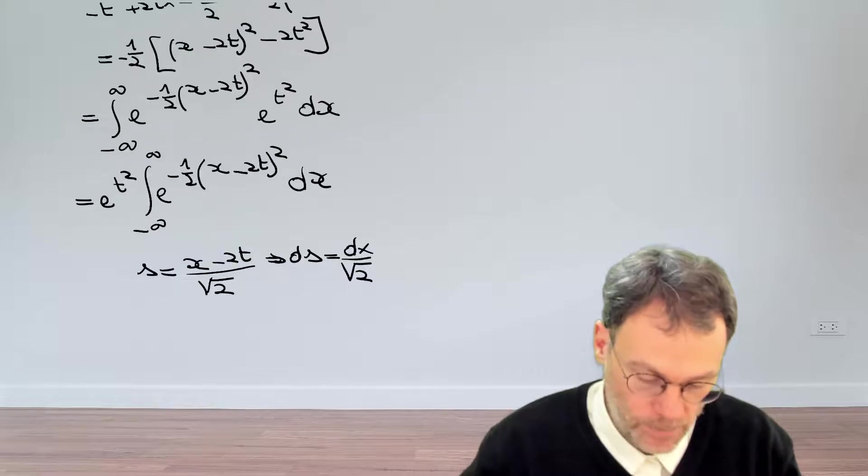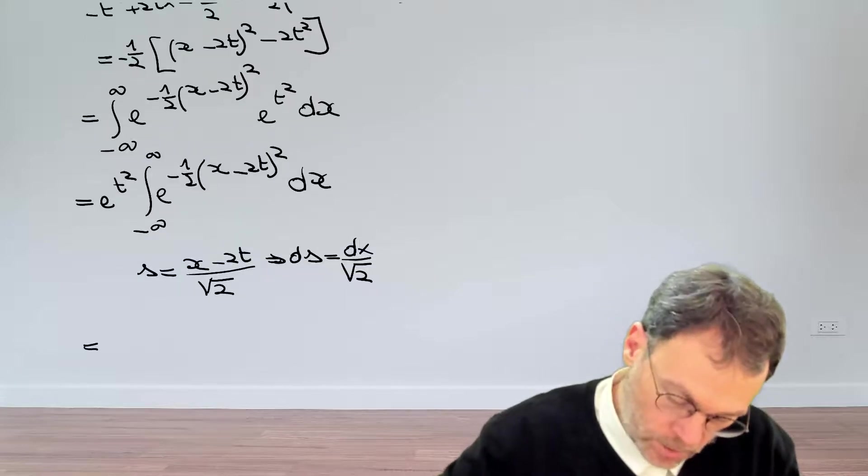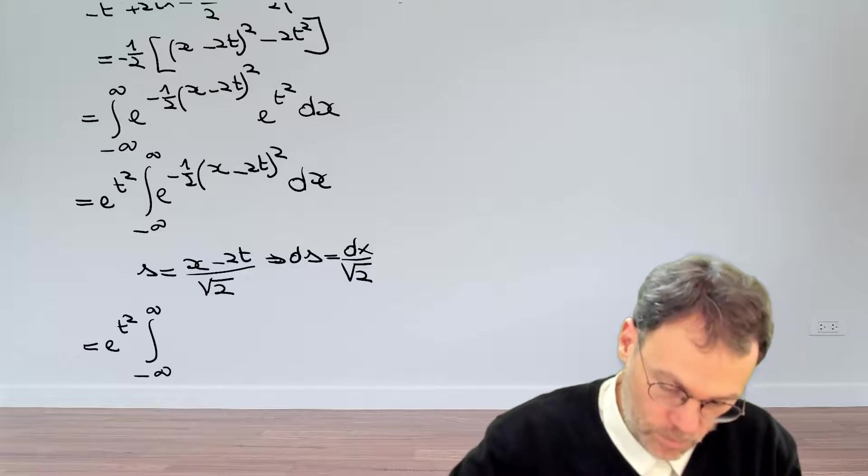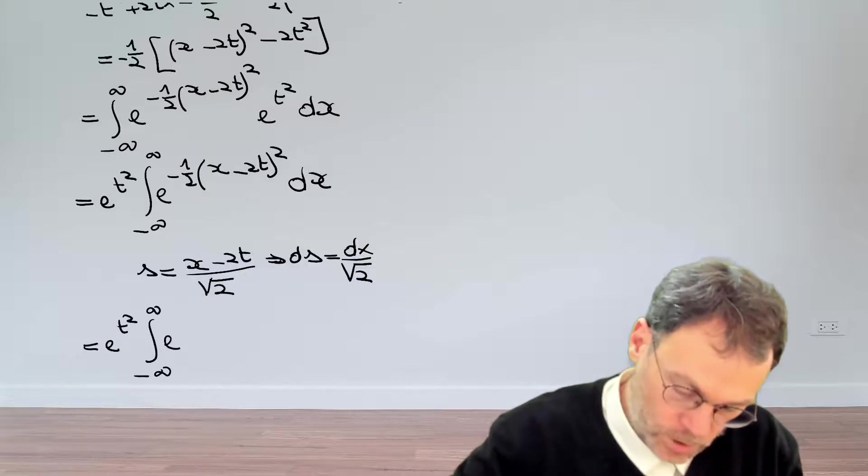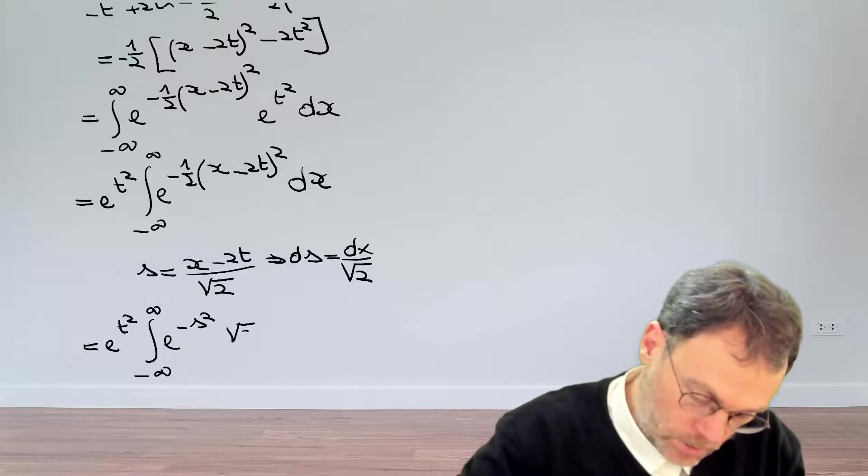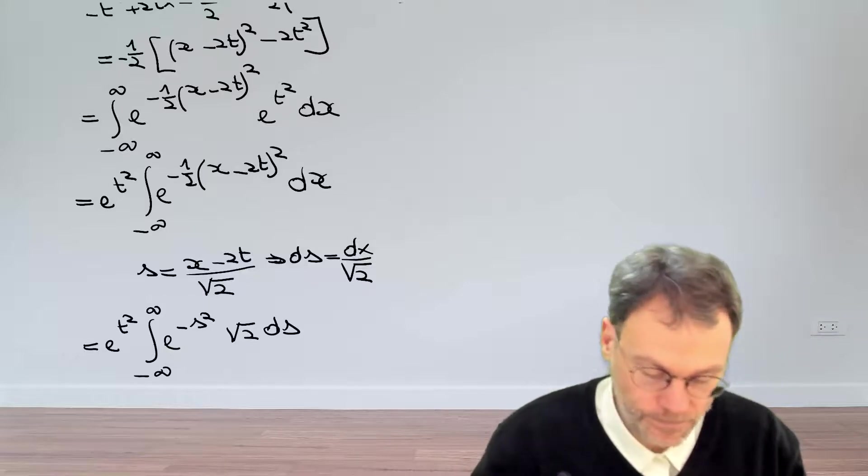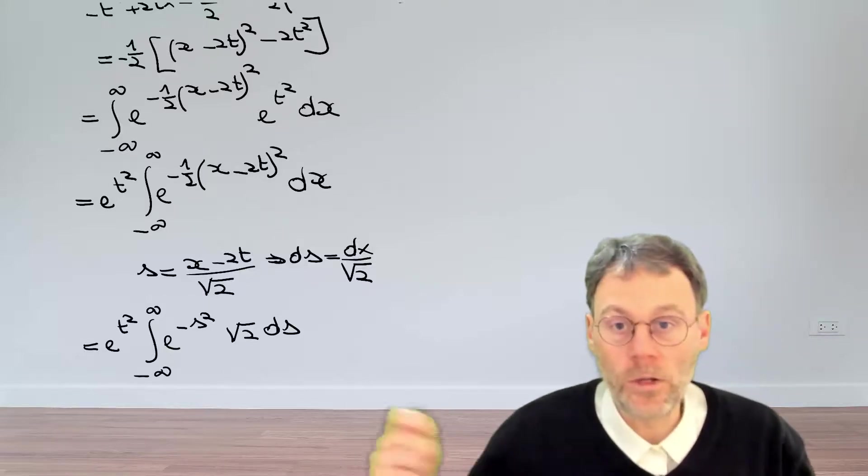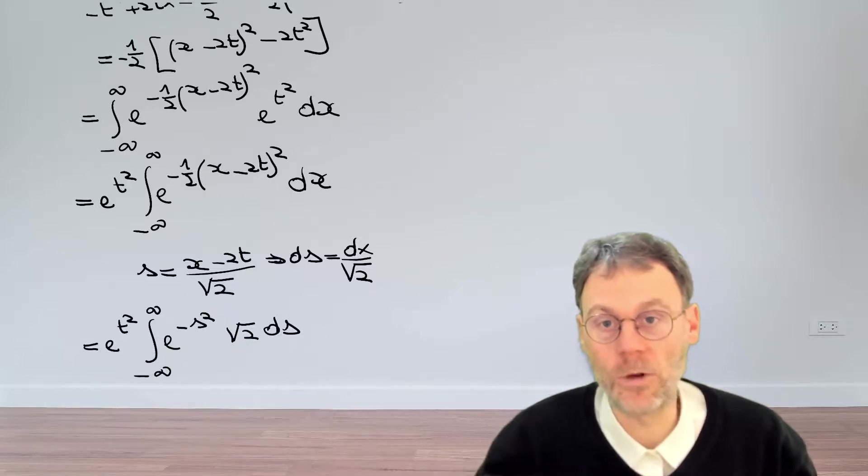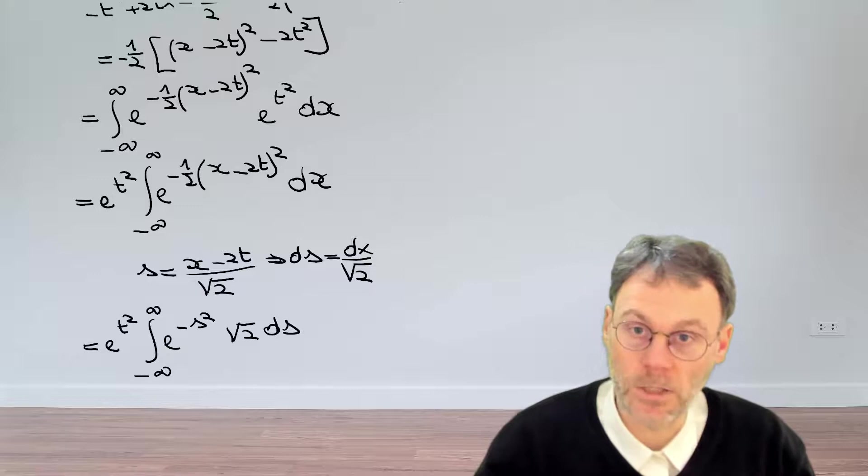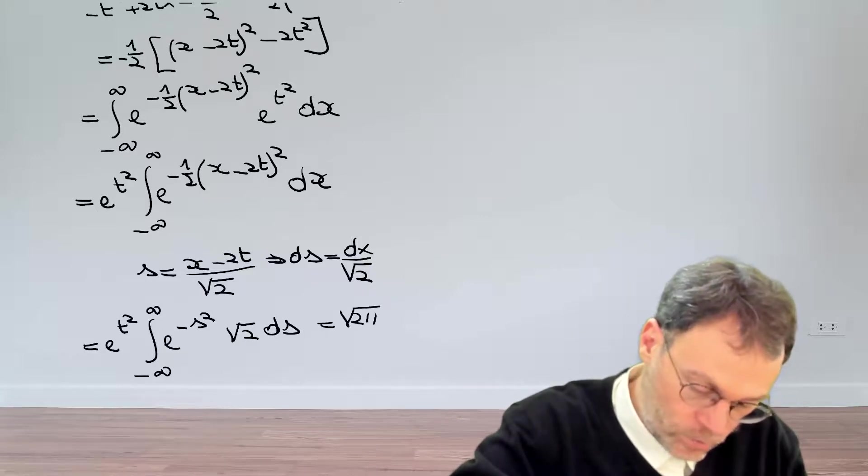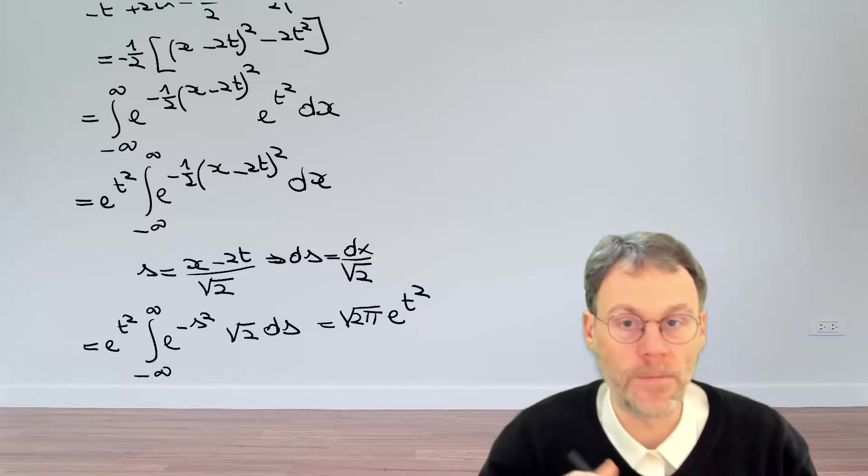And using that, we can simplify our integral to the integral here, exponential t squared, minus infinity to plus infinity, exponential minus s squared. And then dx becomes square root of 2 times ds. Now we know that exponential minus s squared ds, if we integrate that from minus infinity to plus infinity, that gives us a square root of pi. So finally, the end result is square root of 2 pi exponential t squared.